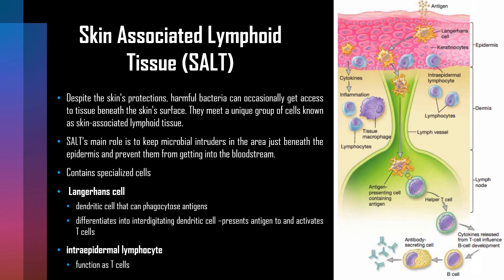Despite the skin's protection, harmful bacteria can occasionally gain access to tissues beneath the skin surface, where they meet a unique group of cells known as skin associated lymphoid tissue, or SALT. The main role of SALT is to keep microbial intruders in the area just beneath the epidermis and prevent them from entering the bloodstream. Two types of specialized cells are present: Langerhans cells and intraepidermal lymphocytes.